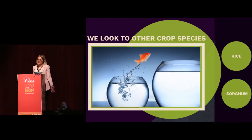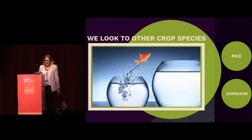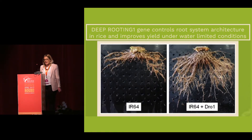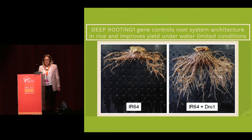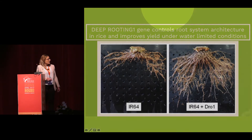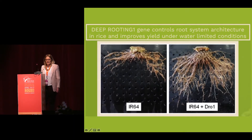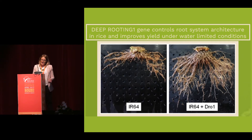When struggling with this issue in major cereal crops, it's useful to look to other crops. Rice has had the most success understanding the genetics controlling root system architecture, with sorghum following slightly behind. Rice is the only cereal crop where a major gene influencing root system architecture has been cloned — deep rooting one, or DRO1. DRO1 was introgressed into a near-isogenic line, and you can see that by adding this single gene, you get significantly more roots deeper underneath the crop.